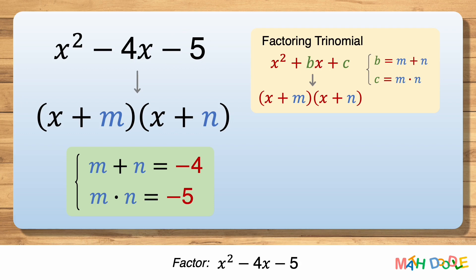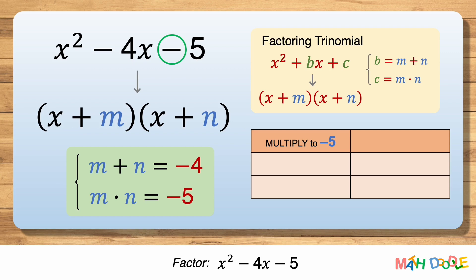So our goal is to find two numbers that add to minus 4 and multiply to minus 5. First, let's think about all the combinations of two numbers that multiply to minus 5. Here the last term is negative, so we need one positive number and one negative number that multiply to minus 5.